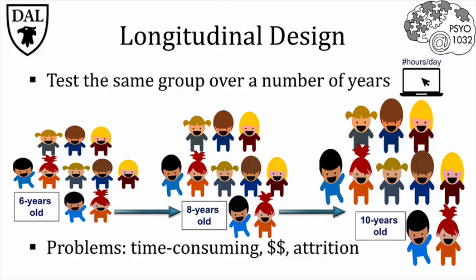One obvious disadvantage is that this takes a much longer time than a cross-sectional design. This usually makes the study more expensive, since participants need to be contacted again and again. Also, there is a problem of attrition, or loss of participants from the original sample over time, which is inevitable as people move away or are no longer interested in participating at later time points.